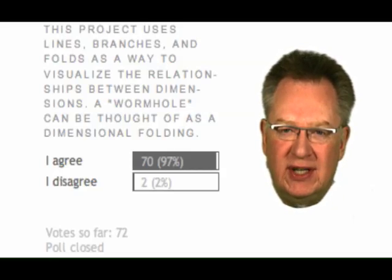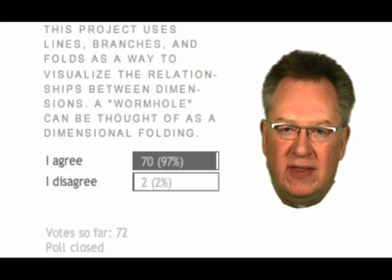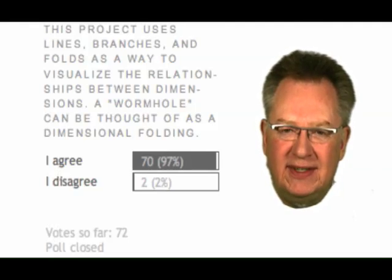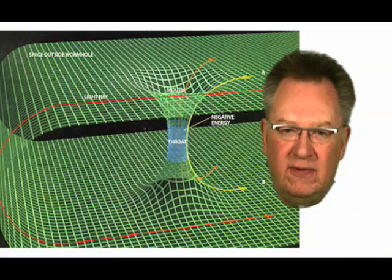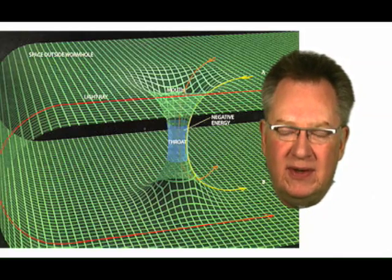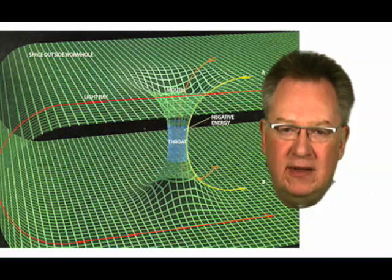The question was: this project uses lines, branches, and folds as a way to visualize the relationship between dimensions. A wormhole can be thought of as a dimensional folding — and we asked people whether they agreed or disagreed with that. You can see the results in the graphic behind me now. Switching to the Wikipedia article on wormholes, which appears to visually confirm what most visitors agreed with: 97% of the people who came to the Tenth Dimension blog agreed that a wormhole can be thought of as a dimensional folding.